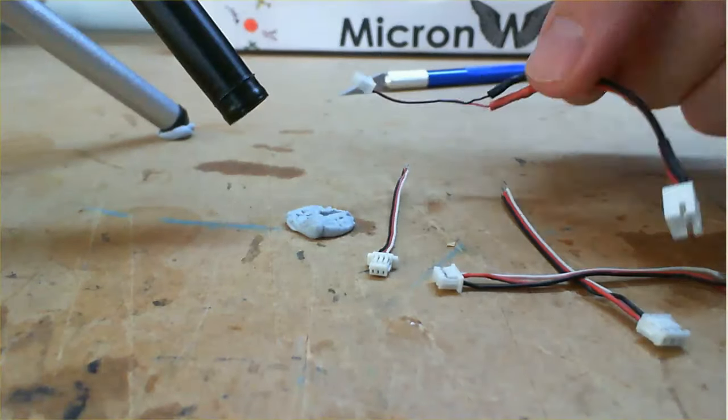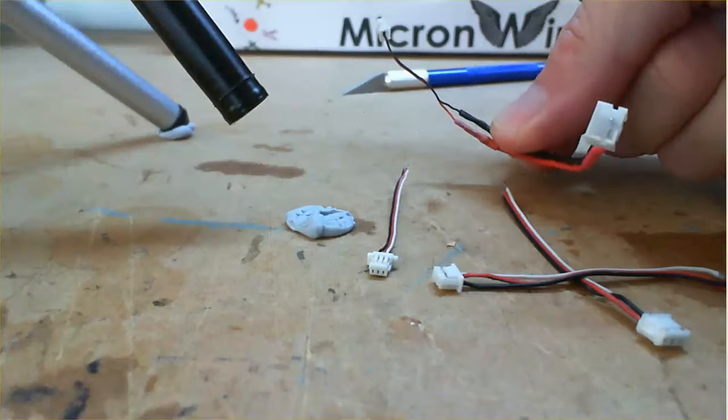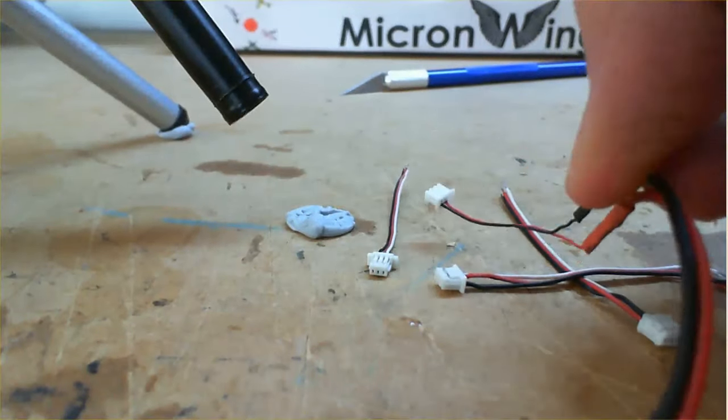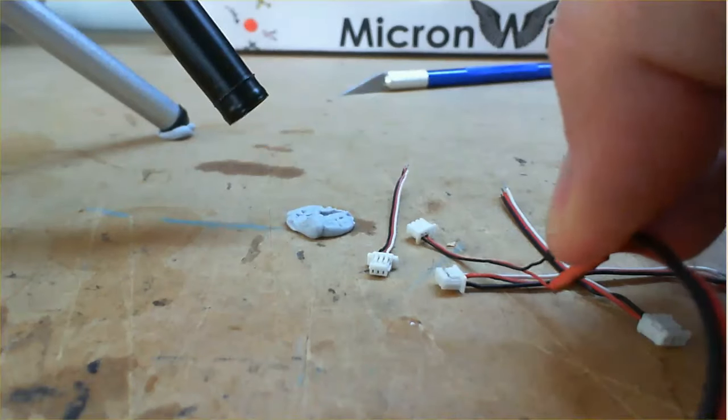Or you might just be making up a connector like this. You can see I've got a battery connector on one end, and the other end I've removed the signal wire. You can see there, so it just powers the receiver.